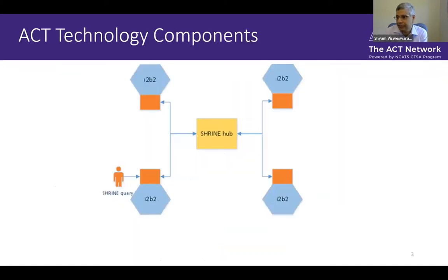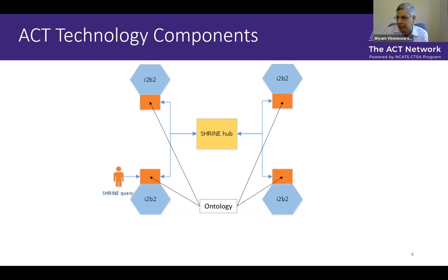The key technology in ACT is mostly I2B2 databases — data marts at the various sites. There is a Shrine hub at Boston which connects all these data marts, and the querying is done through Shrine. What really enables querying the network is the harmonization part, of which the ontology is a key portion. The ACT ontology is loaded at every site and, if necessary, mapped to the local ontology, or in many cases the ACT ontology itself is used as the local I2B2 ontology.